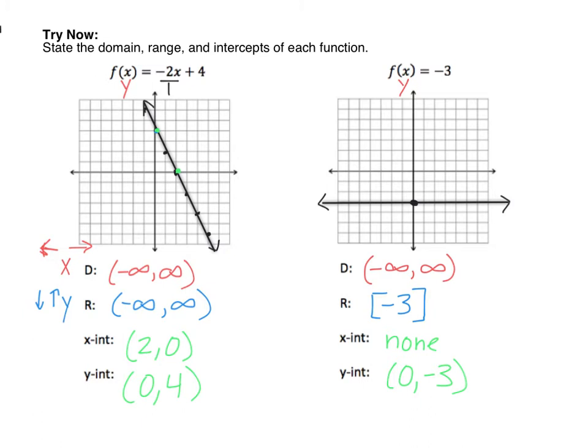For the x and y-intercepts, just look at where the graph crosses the axes. The x-intercept is at (2, 0) and the y-intercept is at (0, 4), the first point we made on our graph. The second equation, f of x equals negative 3, is a constant function. It crosses the y-axis at negative 3 and it's a horizontal line. Its domain is also negative infinity to positive infinity. But for the range, a constant function only touches one y value — so just negative 3 with brackets on both ends. For x-intercept, there's none — it never crosses the x-axis. And the y-intercept is (0, negative 3).